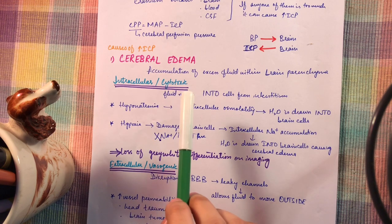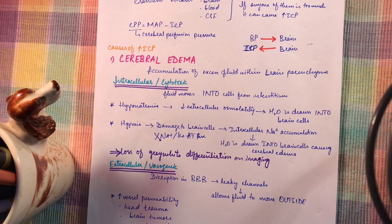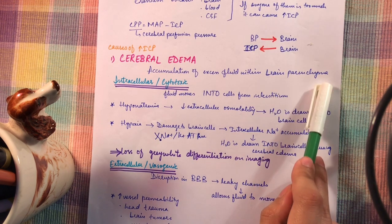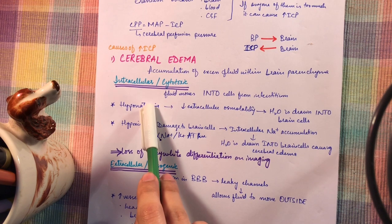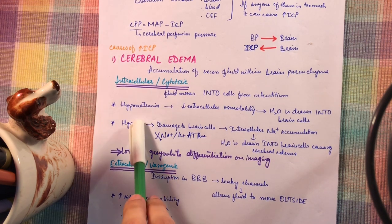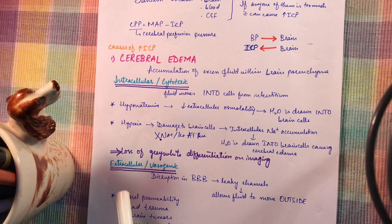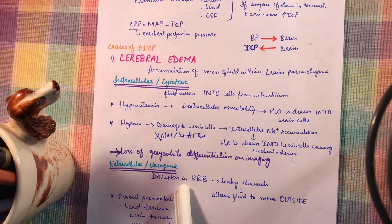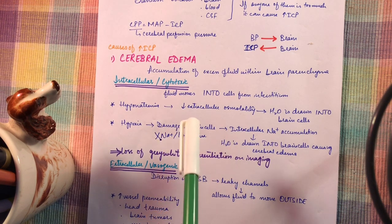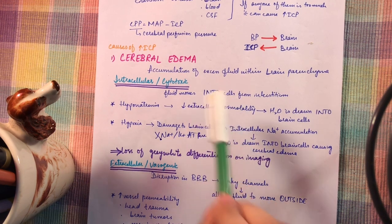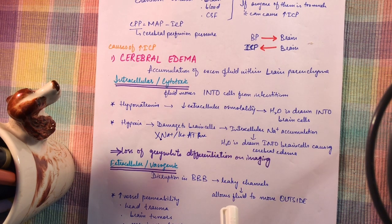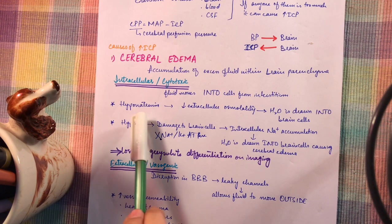So what are the causes of increased intracranial pressure? Let's begin with cerebral edema. Cerebral edema is the accumulation of excess fluid within the brain parenchyma. It has two types: intracellular, also known as cytotoxic cerebral edema, and extracellular, also known as vasogenic. Intracellular means fluid moves into the cells from the interstitium, caused by exposure to certain toxins or due to generalized hypoxic or ischemic injury.